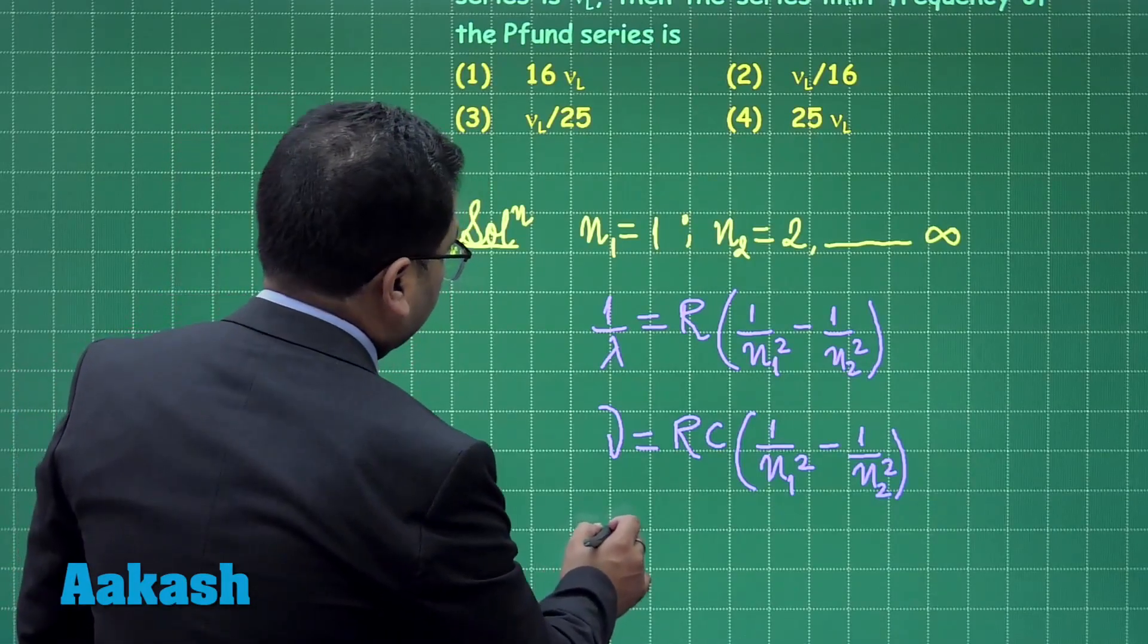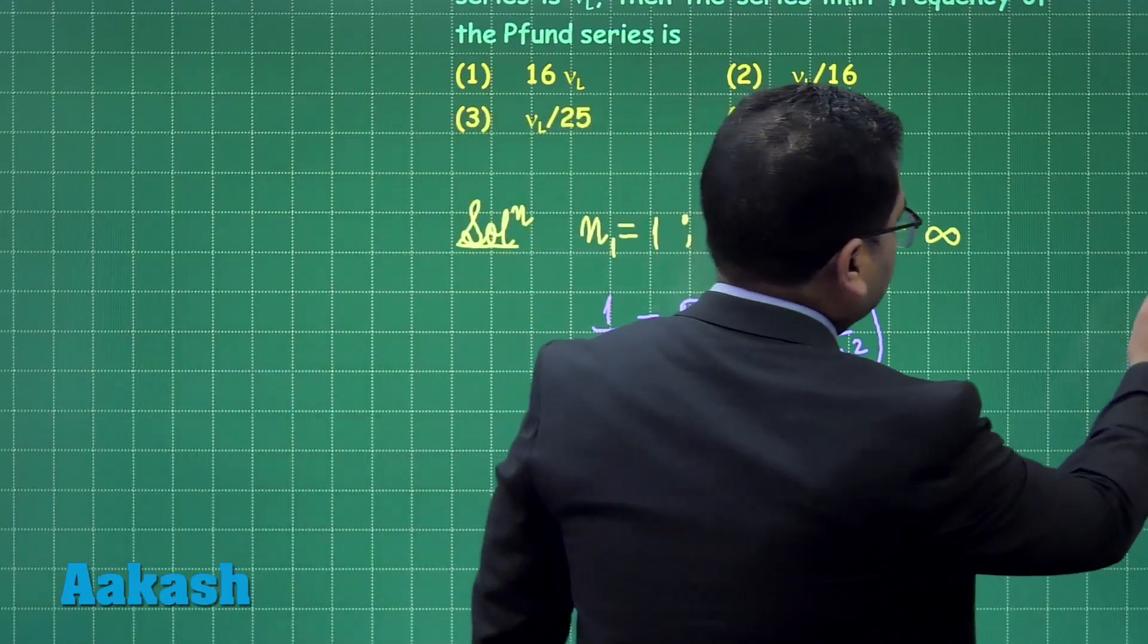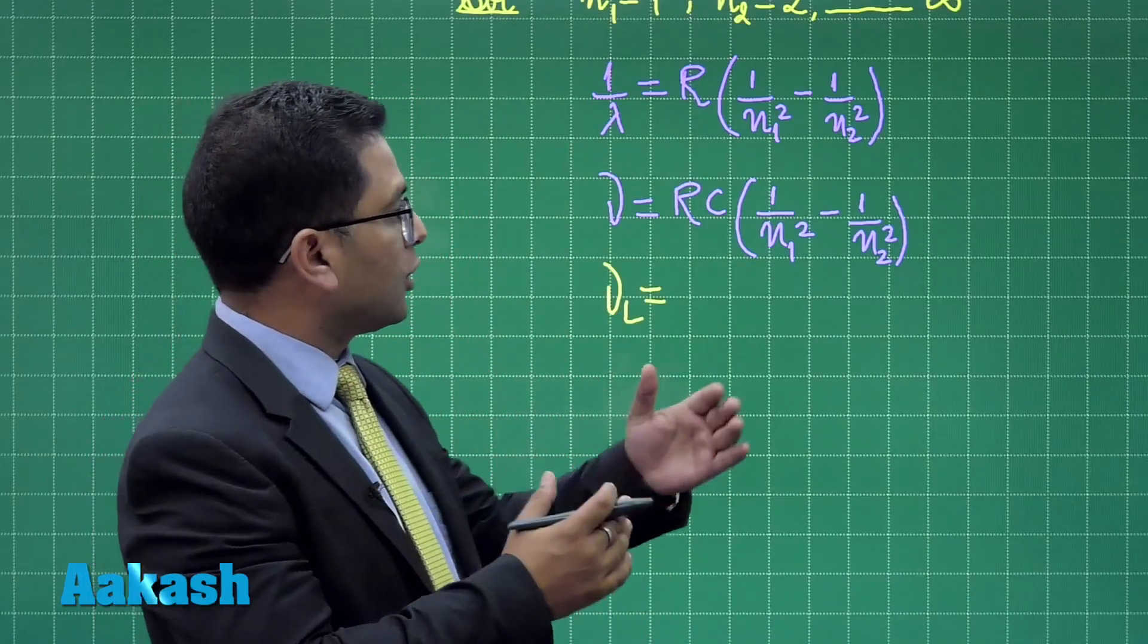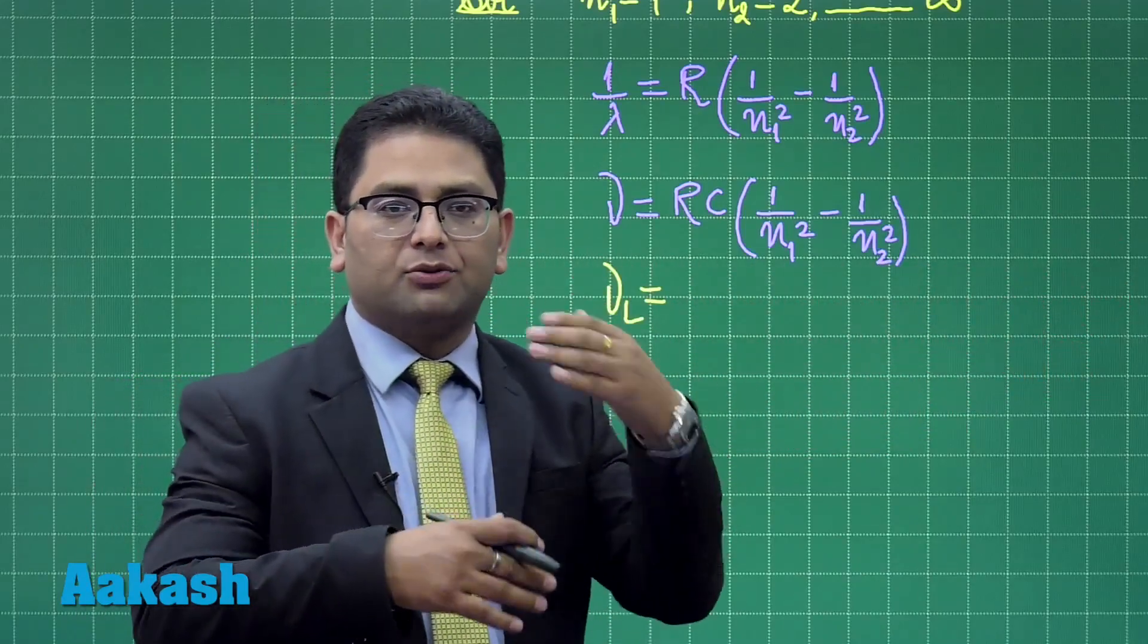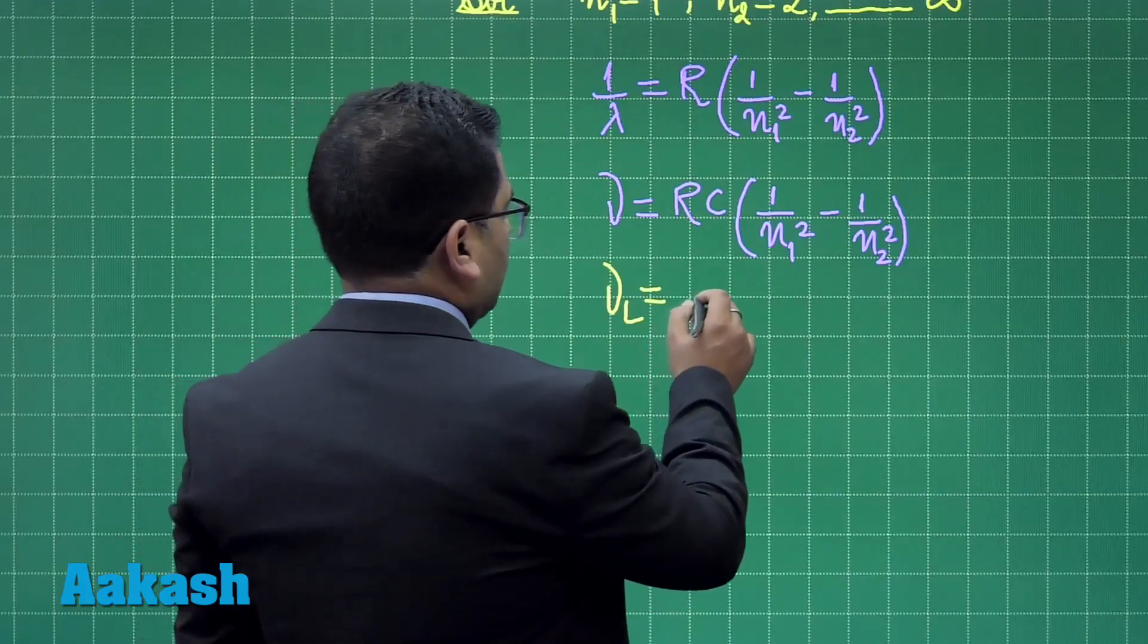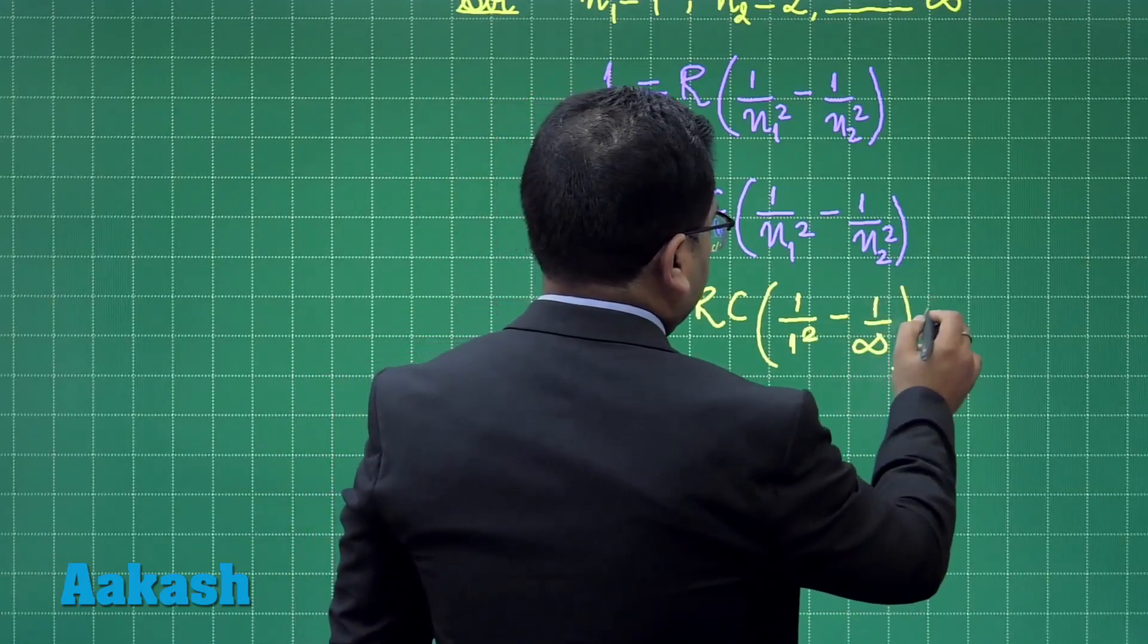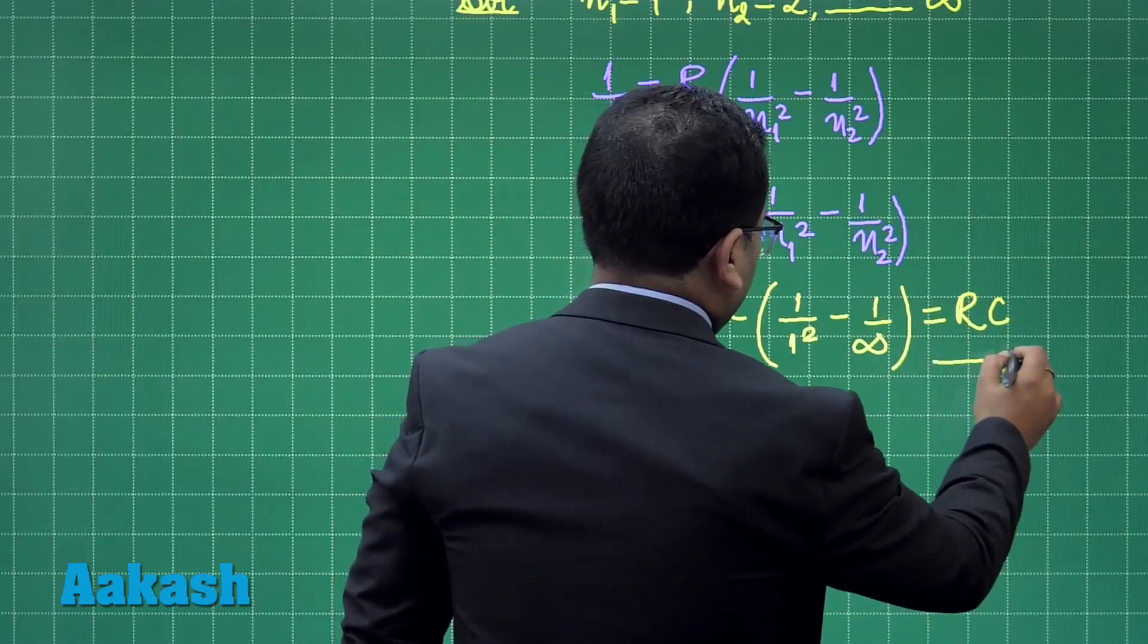When you talk of Lyman, so nu L, we need to find the Lyman series frequency and we need to calculate the limit. So the limit is from 1 to infinity. If it was the first member, it was 1 to 2, but the limit is 1 to infinity. So that is going to be R, C 1 by 1 square minus of 1 by infinity. So that is going to be straightway R, C. Call this as equation number 1.